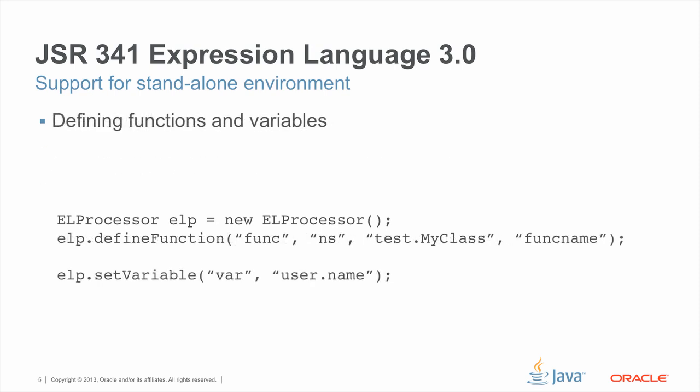The API also includes ways to define functions and variables. The first example shows how a function could be defined by only specifying the name of the class the method is in, and also the method name in that class. Compare this with how it is done in a JSP container, where the user needs to enter entries into a tag library descriptor — this is much, much easier.